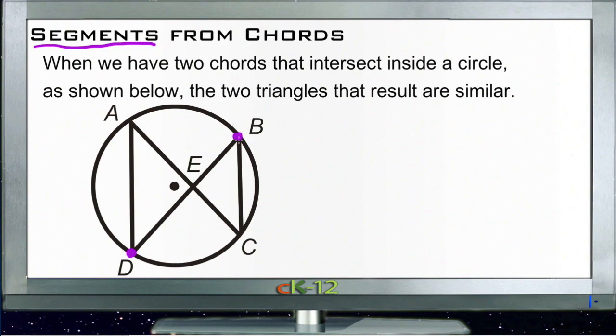So if we draw a chord across a circle, say from B to D here, and then another one from A to C, we note that the two lines, the two chords, intersect here at point E.